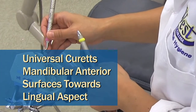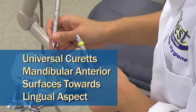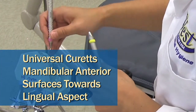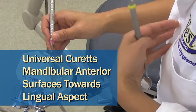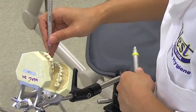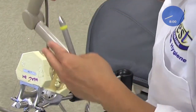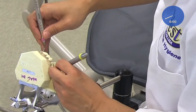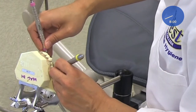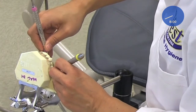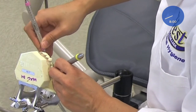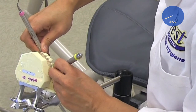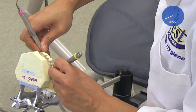Mandibular anterior sextant, the lingual surfaces — surfaces towards you for a right-handed person. You're going to be sitting at 8 o'clock using indirect vision with your mouth mirror. You're going to be starting at number 22 and then fulcruming only probably one tooth away.